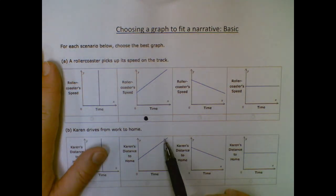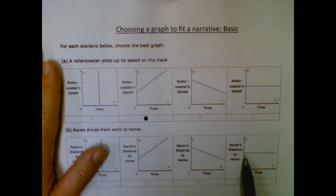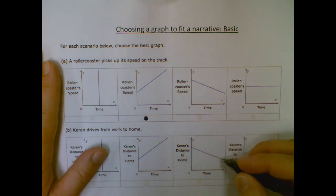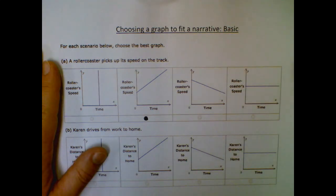So is her distance getting bigger, distance getting smaller, or staying the same? Well, assuming she's going to make it home eventually, hopefully her distance, she's getting closer and closer to home, so the distance is getting smaller. So if she starts 10 miles away, after a little bit, she'll be 9 miles away,